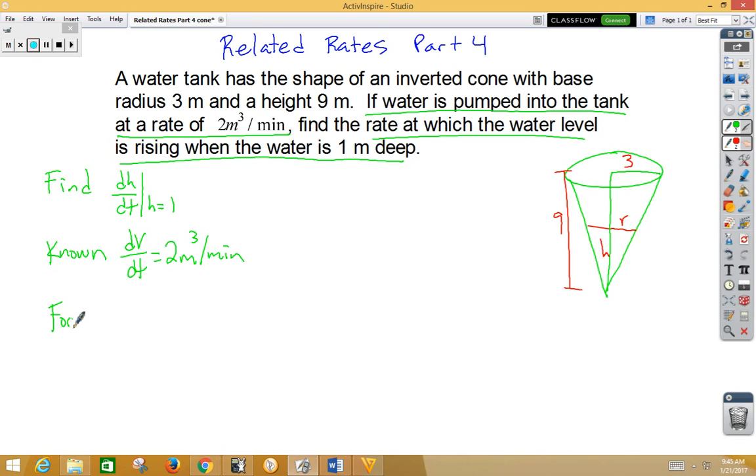Now, our formula for the volume of a cone is 1/3 πr²h. Now, what you'll notice is that there are 3 variables instead of 2 variables. That's what's going to create a little extra work for us in this problem.